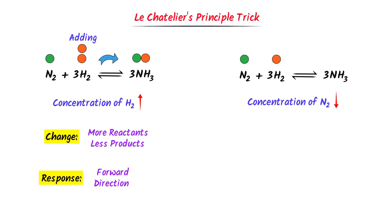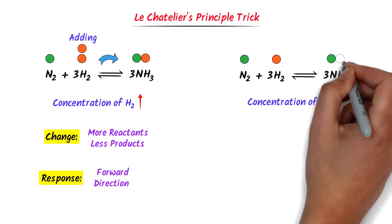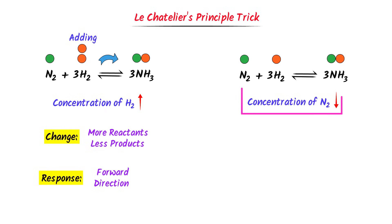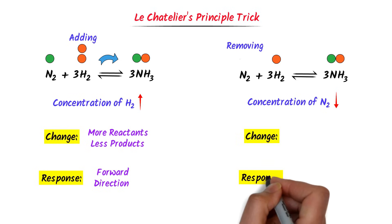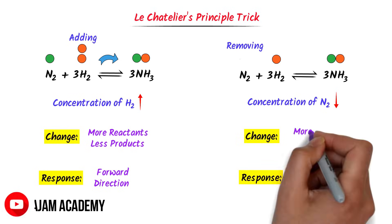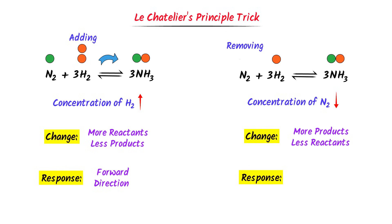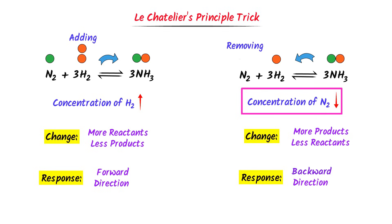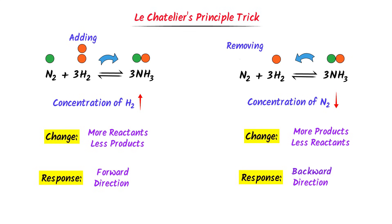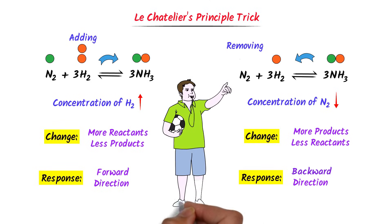Secondly, when we decrease the concentration of nitrogen gas, it means that we are reducing or removing nitrogen gas. If I ask you what is changing and what is the response of the system? There are more products and less reactants. The equilibrium will proceed in the backward direction in order to form more reactants and neutralize the effect. Therefore, if we decrease the concentration of nitrogen gas, equilibrium will shift in the backward direction to neutralize the effect and restore chemical equilibrium. Using this trick, we can easily calculate the equilibrium shift if concentration is changed.